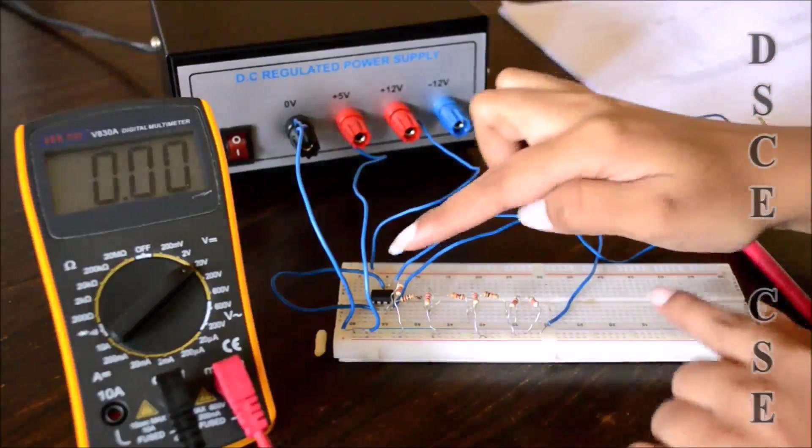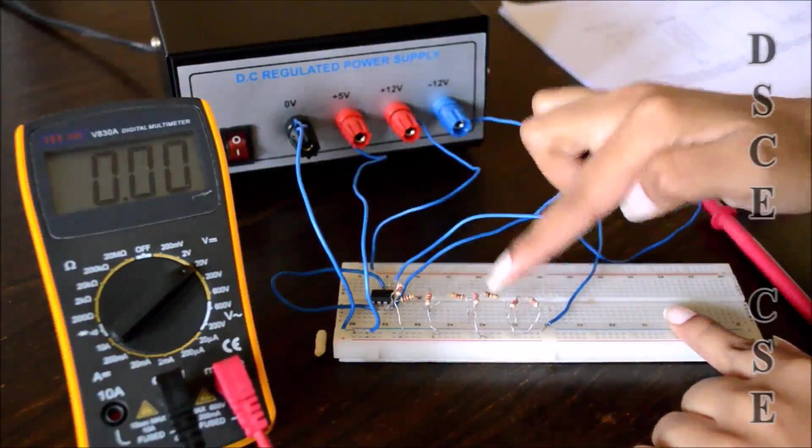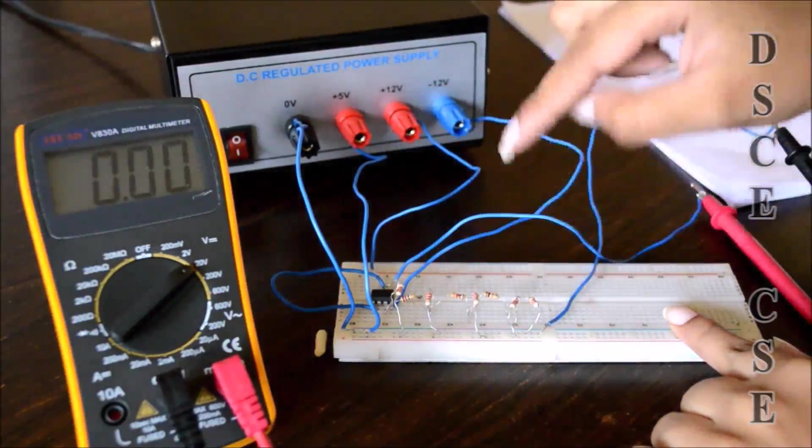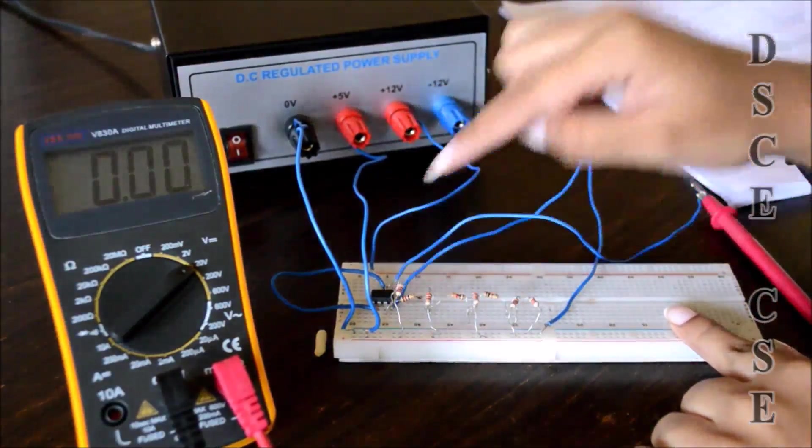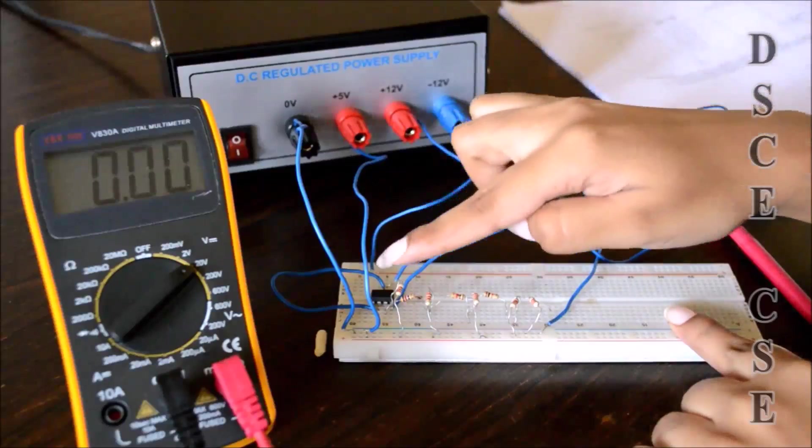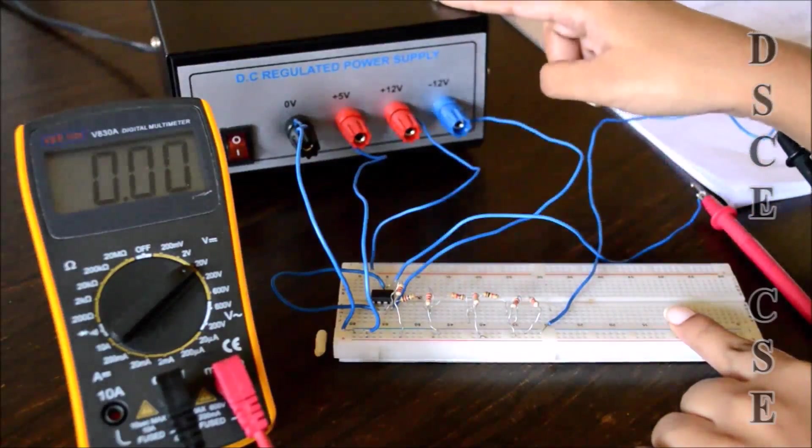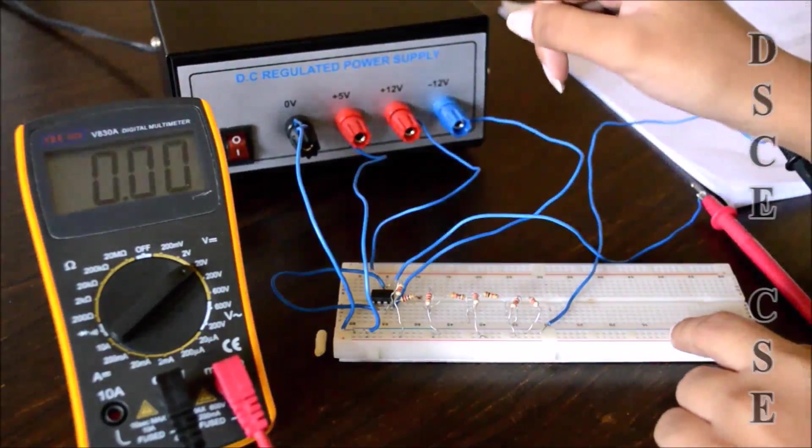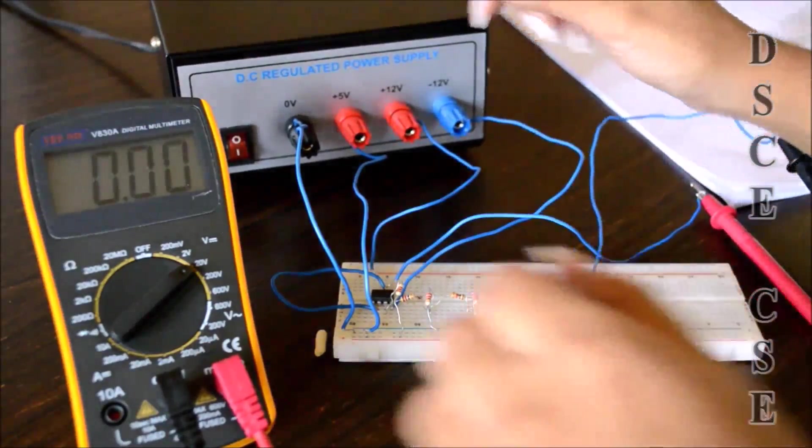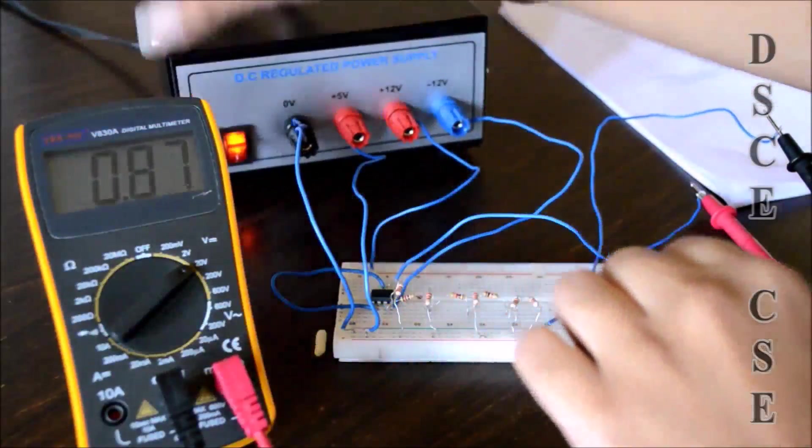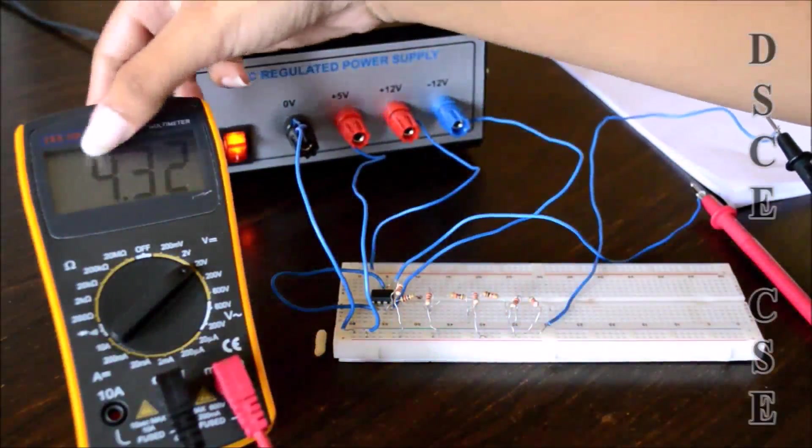As we have connected D0, D1, D2, D3 to the plus VCC, the value of the inputs that we are giving is equal to 1. As all the four are 1, the decimal equivalent will be 15. Let us check the output for 15. That is 4.52. Theoretically, the value must be 4.62.